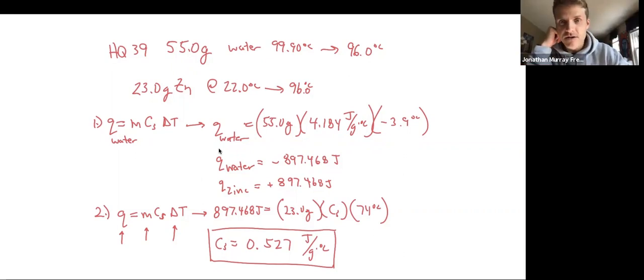Because, and this is one of the challenges with calorimetry, the water starts at 99 degrees and goes down to 96 degrees. So the water loses energy—it's a negative Q.